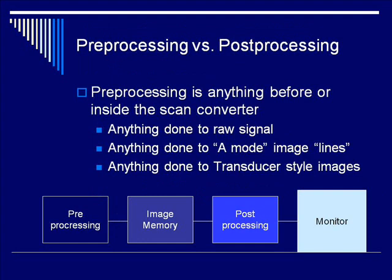Now, on to pre-processing and post-processing. Remember that we've just discussed one part of the role of the scan converter — we still need to discuss some things that happen in or around it. The image we have is composed of rows and columns of pixels, but we still haven't filled in the gaps or shaped the image correctly. All of the signal processing that converts from what the transducer sees to what we see is either pre-processing or post-processing. Pre-processing is signal processing that happens before or inside the scan converter — anything done to a raw signal, to A-mode image lines, or to transducer-type images.